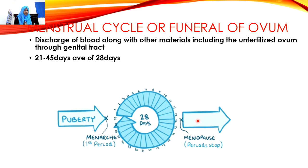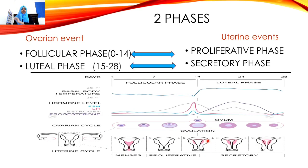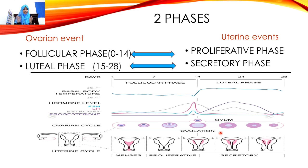The cessation or stopping of periods is called menopause. The menstrual cycle can be difficult to understand, but the key point is that it happens in both the ovary as well as the uterus — classified as ovarian events and uterine events.